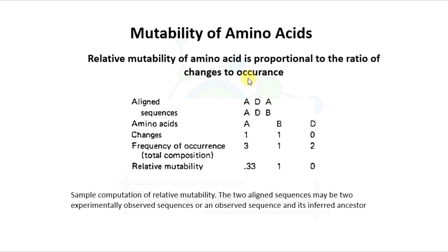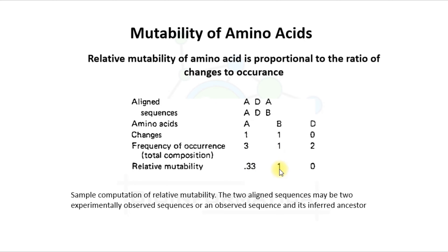Let's take an example to have a clear picture about relative mutability. Here we see aligned sequences ADA and ADB. The amino acids are A, B, and D. Changes observed are 1 for A, 1 for B, and 0 for D because D is not seen changed. The frequency of occurrence in total composition: for A it is 3, for B it is 1, and for D it is 2. So the relative mutability, which is proportional to the ratio of changes to occurrence, is 1/3 = 0.33 for A, 1 for B, and 0 for D.